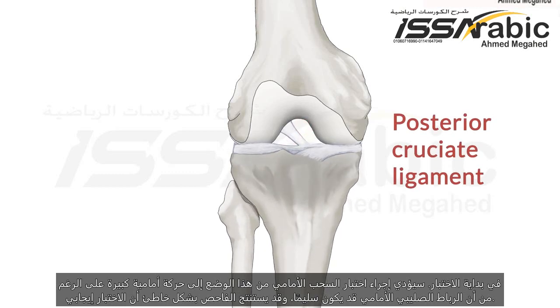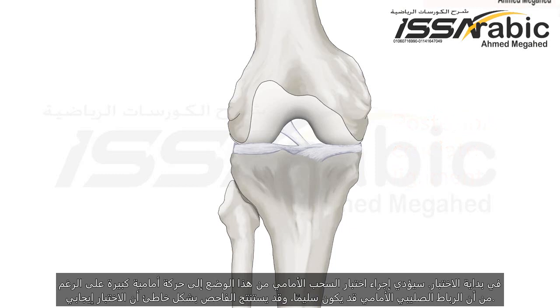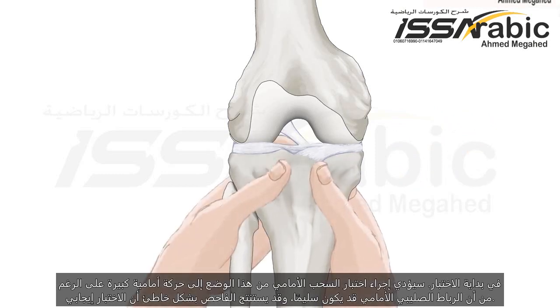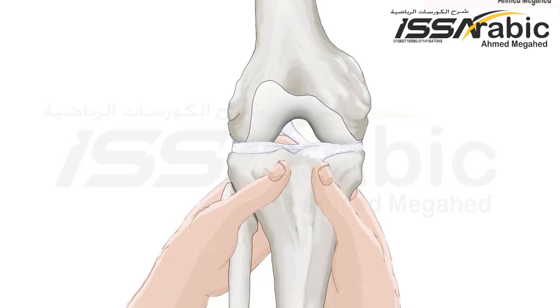Performing the anterior drawer test from this position would then result in significant anterior movement even though the ACL could be intact, and the examiner may wrongly conclude the test is positive.